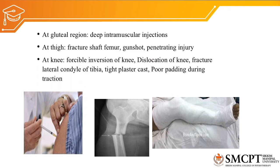At knee level, the most commonly injured nerve is the common peroneal nerve. Common causes include forcible inversion of the knee, dislocation of the knee, fracture of the lateral condyle of the tibia, tight plaster cast, and poor padding during traction — all of which can compress the common peroneal branch of the sciatic nerve at the knee level.